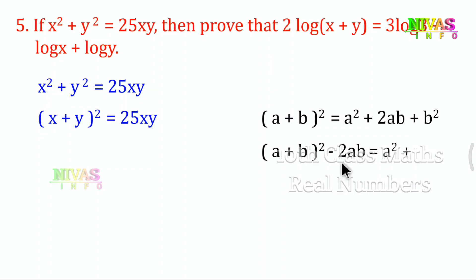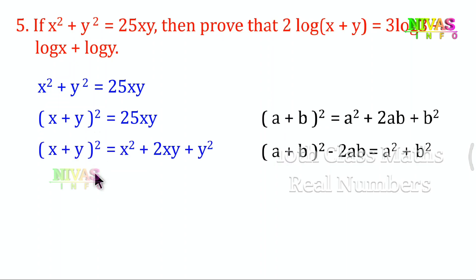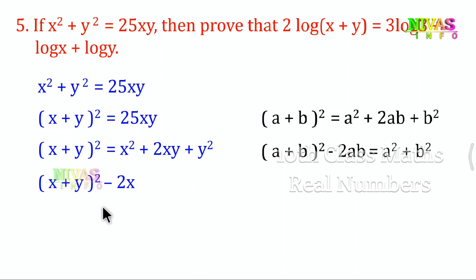Using the formula: (a+b)² - 2ab = a² + b². Applying to x and y: (x+y)² - 2xy = x² + y². Since x² + y² = 25xy, substituting: (x+y)² = 25xy + 2xy.